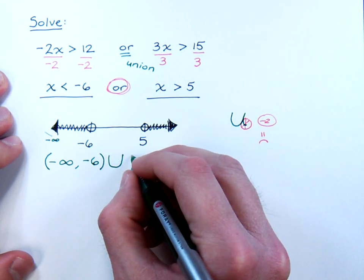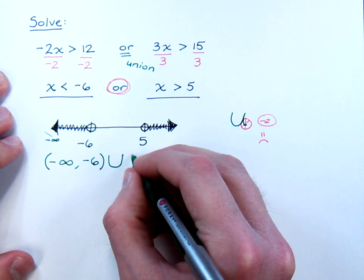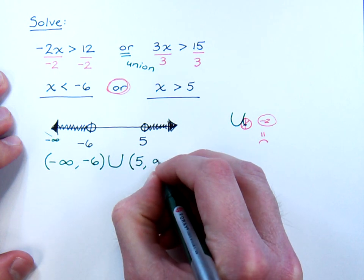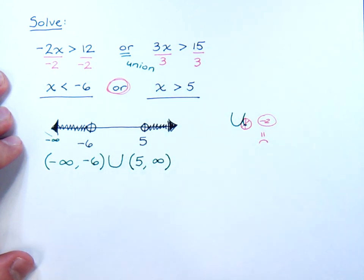The other part starts at five, since I'm not including five. Five, parentheses, five, comma, infinity, and we're going to close off the parentheses, just like that.